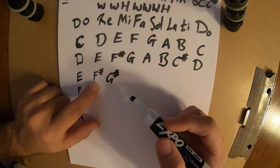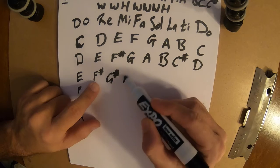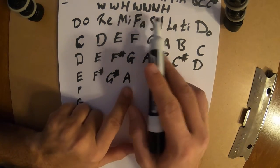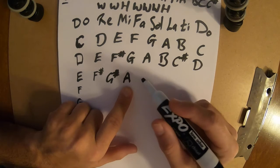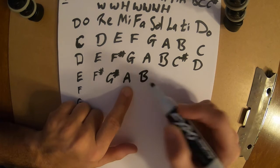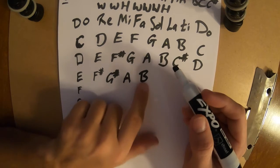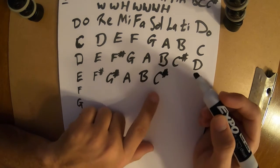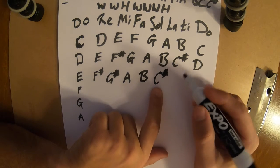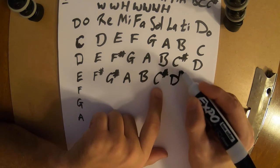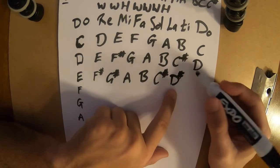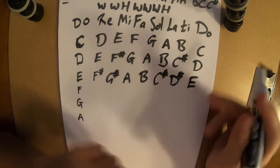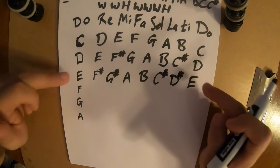Now we're on a half step. Half step from G sharp brings us to A. We're now on three whole steps in a row. First one brings us to B. From B, whole step brings us to C sharp. From C sharp, whole step brings us to D sharp. We're now on the final half. D sharp, half step brings us back to E. First and last match, we did it correctly.